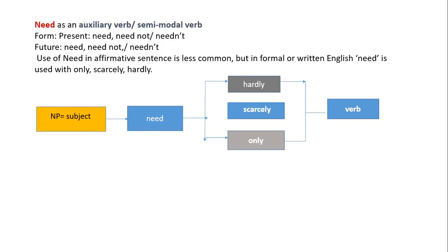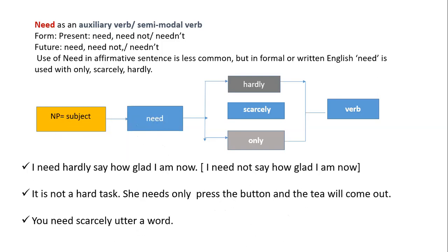Examples of formal 'need': 'I need hardly say how glad I am now.' 'It is not a hard task.' 'She needs only press the button and the tea will come out.' 'You need scarcely utter words.' When 'need' indicates the authority or advice of the speaker in present or future terms, 'to' is not placed before the verb — you do not say 'need not to'. Examples: 'You need not go there', 'You need not ask my permission.'